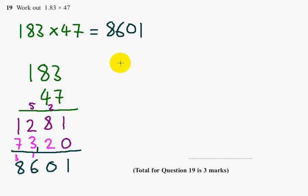Therefore, 1.83 times by 47. 183 is exactly 100 times bigger than 1.83. So we need to make this 100 times smaller.